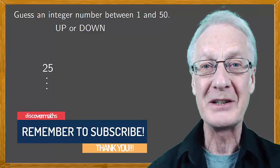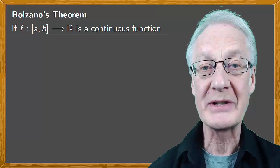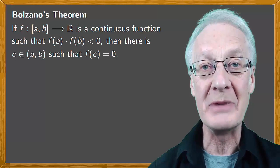Bolzano's theorem states that if we have a continuous function f defined on a closed interval [a, b] in ℝ such that f(a) · f(b) < 0, then there is a c in the open interval (a, b) such that f(c) = 0.